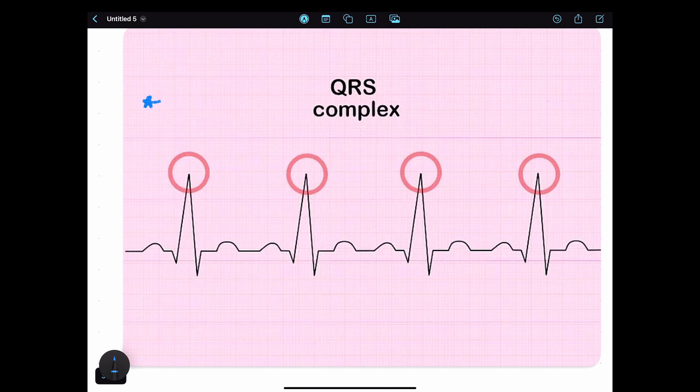The six-second method is very simple. We have to calculate the number of QRS complexes over the period of six seconds, or equal to 30 large boxes, and multiply it by 10.